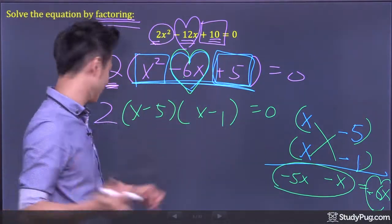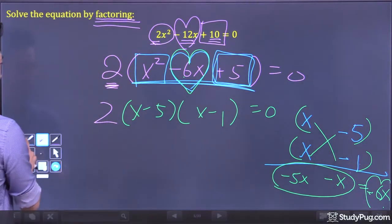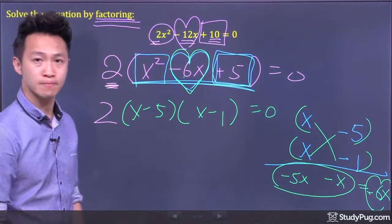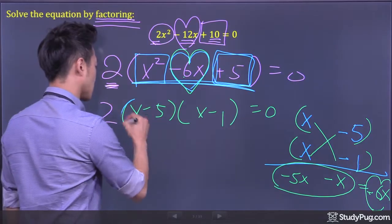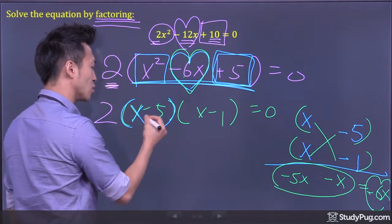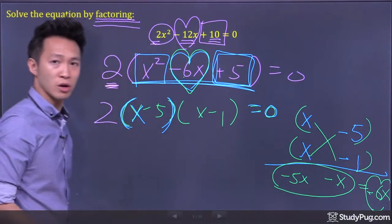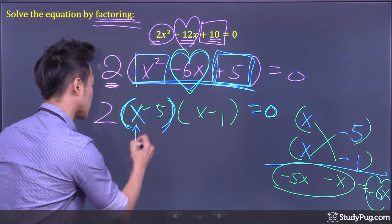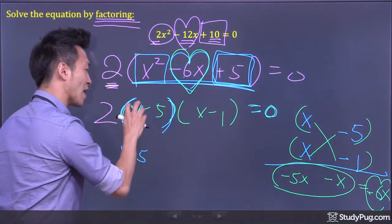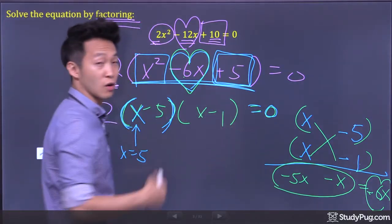Now the rest is easy. To solve this equation, ask yourself, look at the first bracket here. What x value will make this whole thing equal to 0? Well, x must be 5, because 5 - 5 is 0.